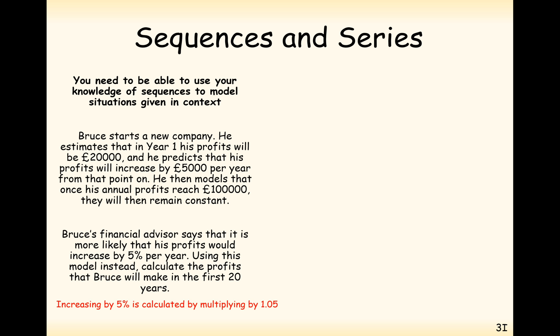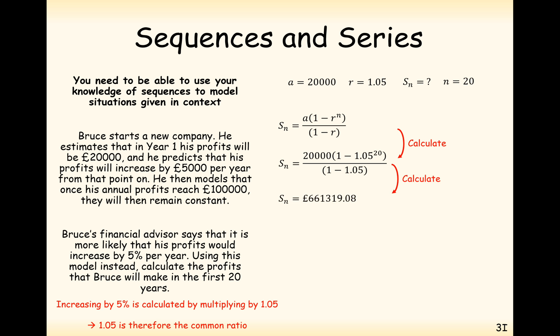In this case here, it's a geometric progression. The ratio this time is 1.05, that's the decimal multiplier for a 5% increase. And we want to work out the summation for 20 years. So we need to use the geometric summation formula. Substituting all the values into this formula, we get £661,319.